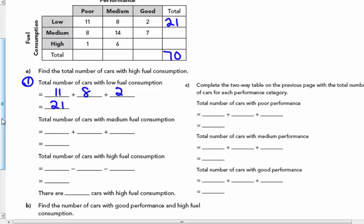I'll put that in the total column there. Secondly, I can find the cars with medium fuel consumption: 8, 14, and 7, which adds to 29.